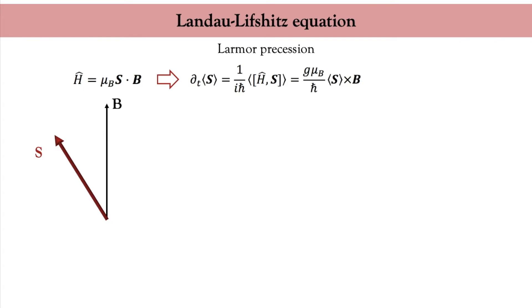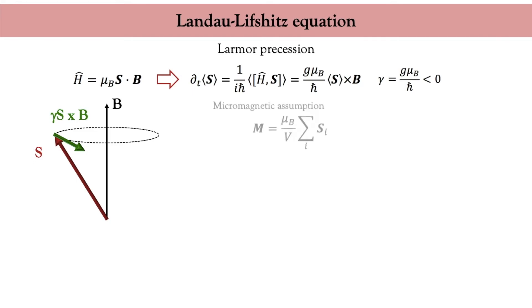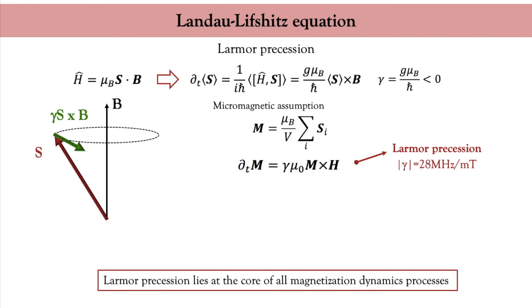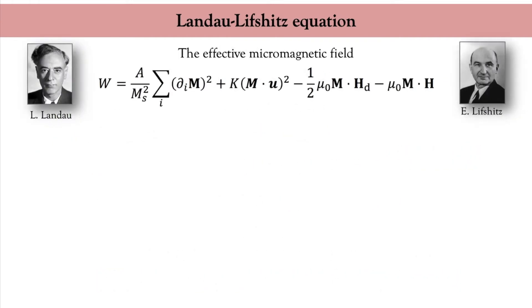Physically, this cross product means that the spin momentum precesses around the magnetic field. Note that the gyromagnetic ratio γ is negative, which means the precession is clockwise. We can transform this equation of motion into the micromagnetic framework and obtain the Larmor precession equation, which is central to magnetization dynamics. Projecting this equation onto the magnetization vector, we obtain that m·(dm/dt) = 0, meaning the magnitude of the magnetization does not change over time. However, the interactions involved in magnetization dynamics are far more complex than just an external magnetic field — including magnetic exchange, anisotropy, the demagnetizing field, and the Zeeman field.